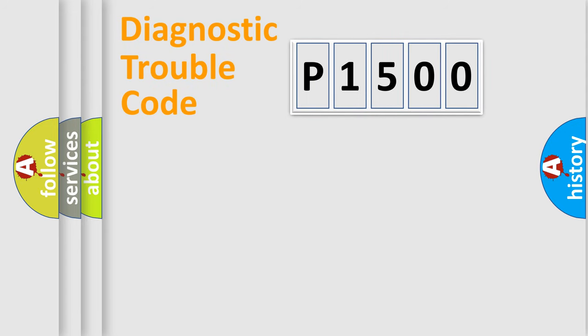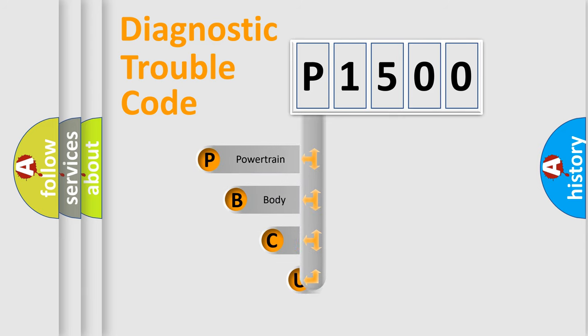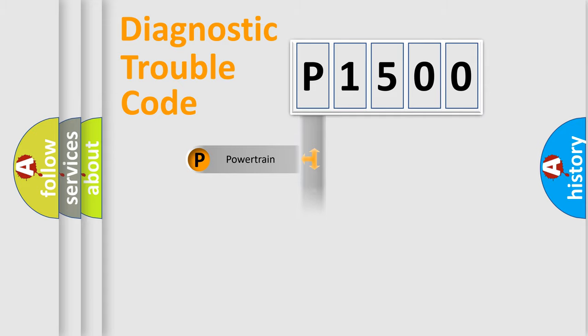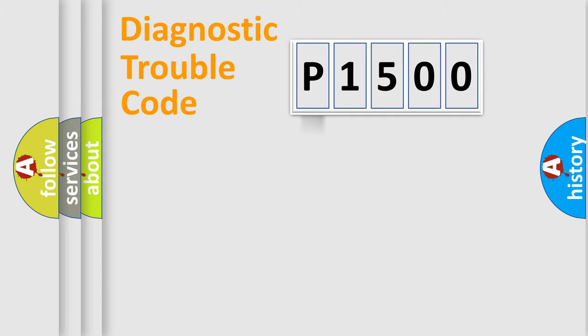Let's do this. First, let's look at the history of diagnostic fault code composition according to the OBD2 protocol, which is unified for all automakers since 2000. We divide the electric system of automobile into the four basic units: Powertrain, Body, Chassis, and Network.